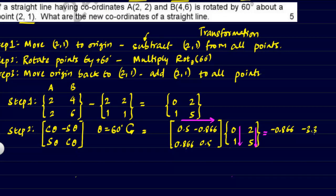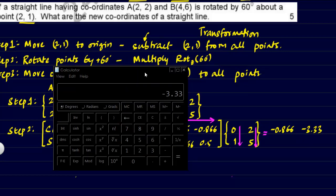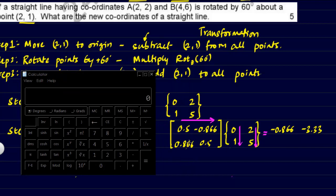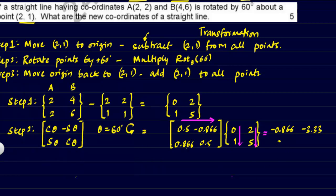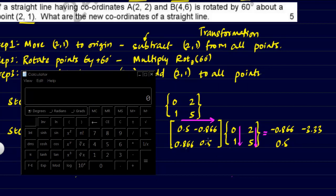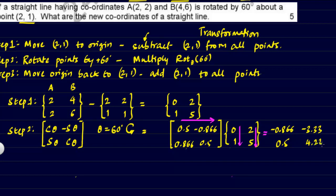For the second row: 0.866×0 + 0.5×1 = 0.5 for the first column. Then for the second column: 0.866×2 + 0.5×5 = 1.732 + 2.5 = 4.232, so approximately 4.23.